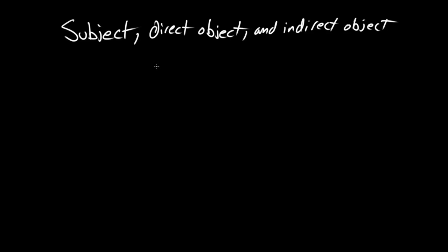Hello Grammarians, hello Rosie. Hi David. So today we're going to be talking about subject, direct object, and indirect object, and identifying those within a sentence. But first I suppose we should figure out what those things are.